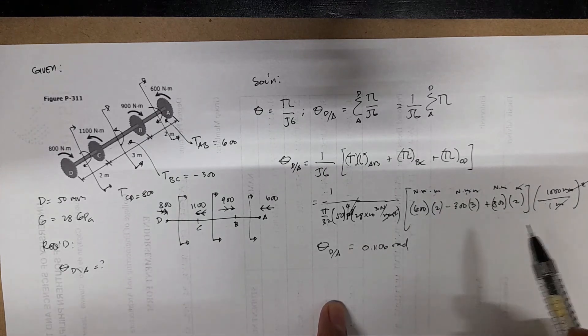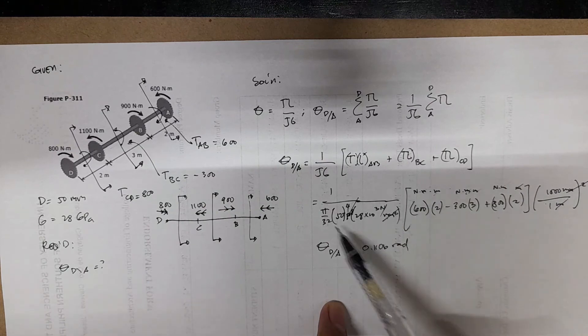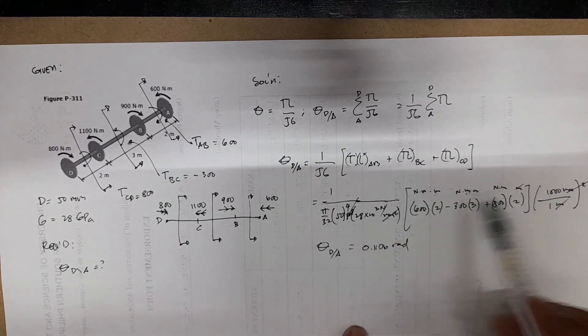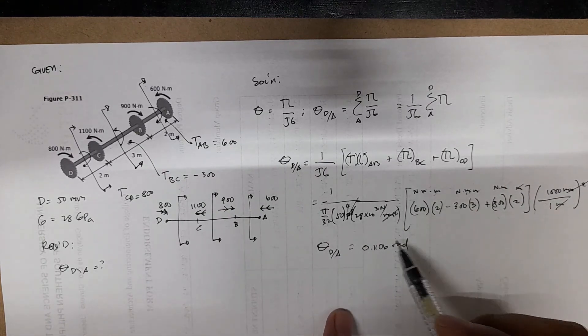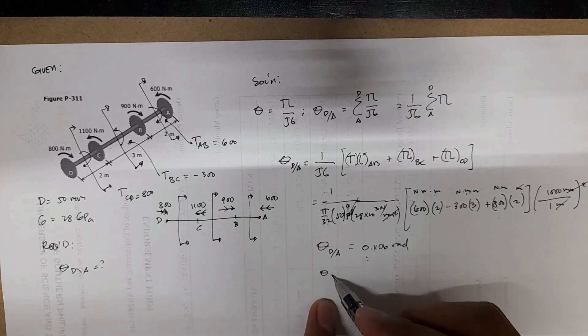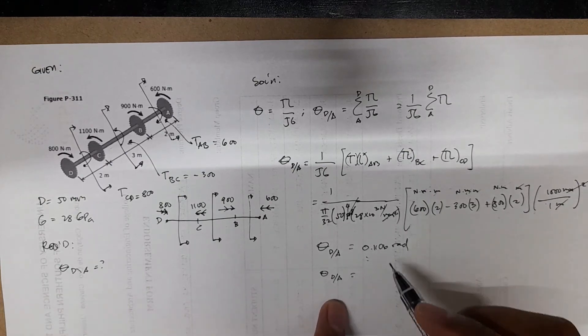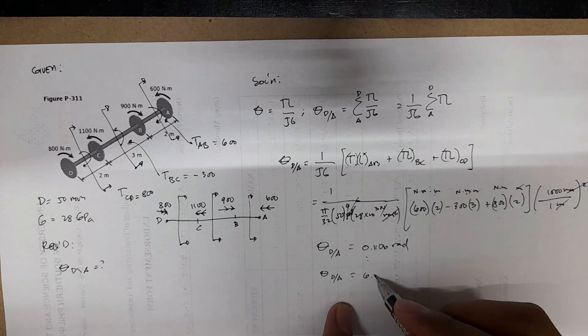You can also plug this into a calculator, and then you can let the calculator evaluate this equation, and then you'll have this one. In radians, if you want in degrees, you'll have 6.34 degrees.